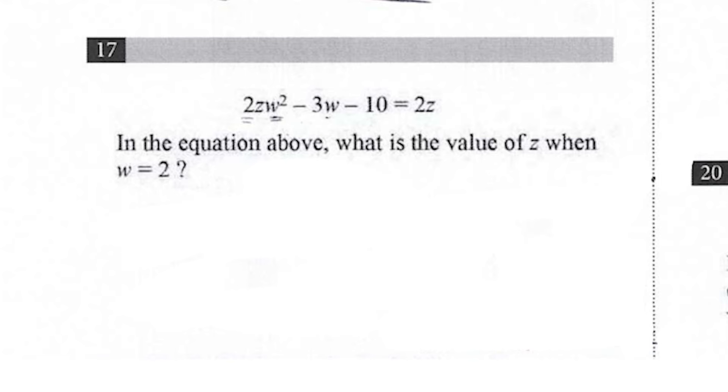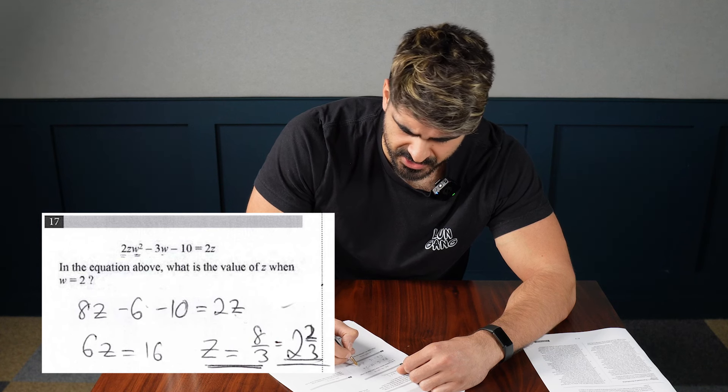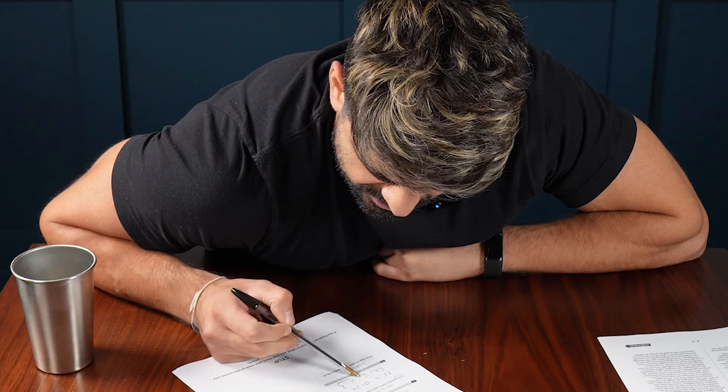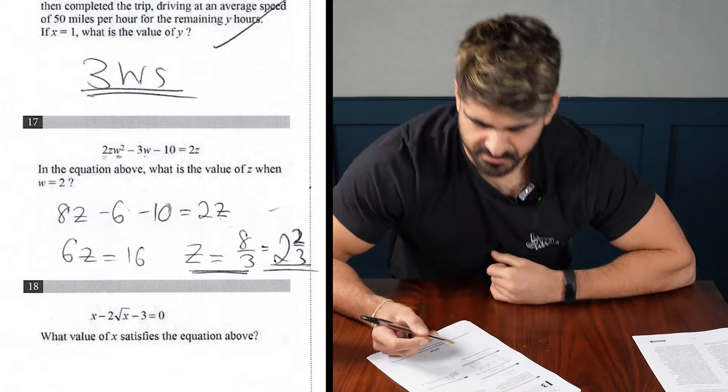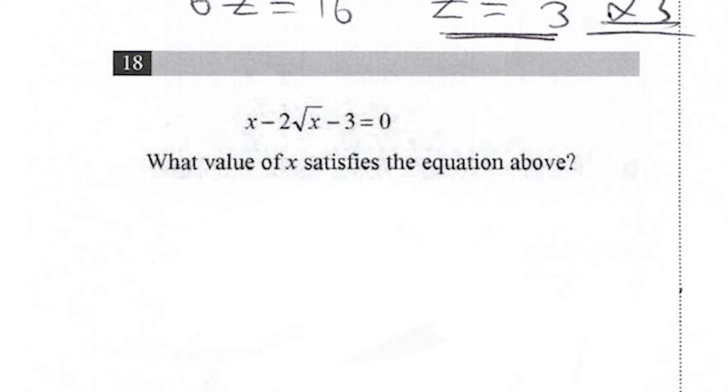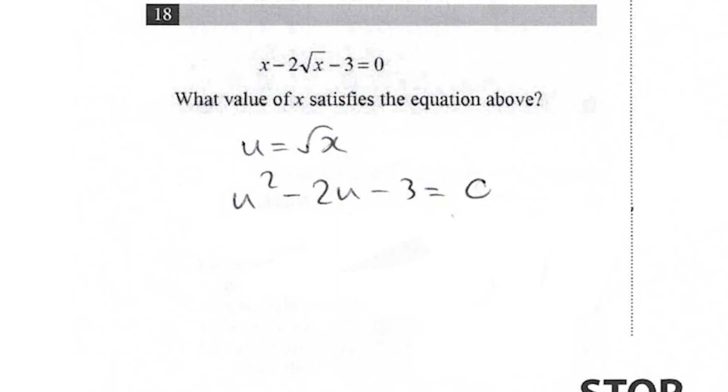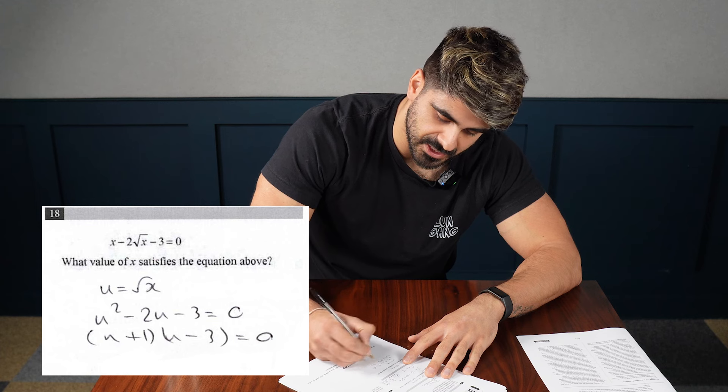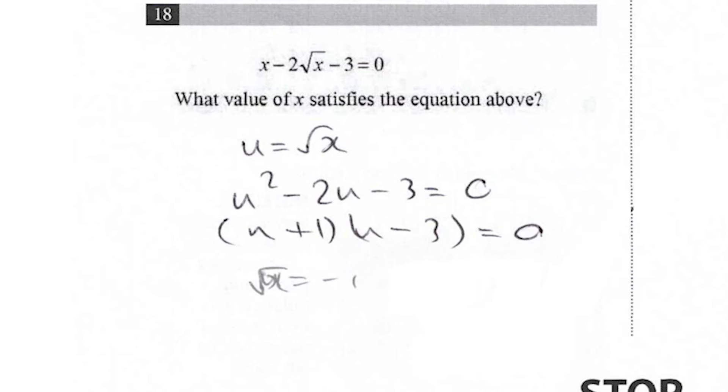In the equation above, what is the value of Z when W is 2? So Z is 16 over 6, which is 8 over 3. There's nothing else it could be. What value of X satisfies the equation above? This is a quadratic, right? So we'll let U equal root X. You would have U squared minus 2U minus 3 is 0. So easy factorizing. 3 and 1 minus plus is 0. So U is minus 1. U is 3. Root of X can't equal minus 1, but root of X can be 3, so X is 9. Nice.